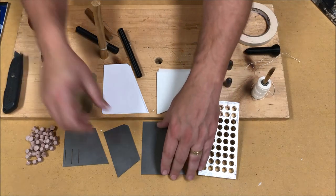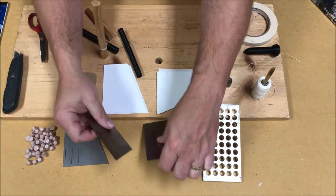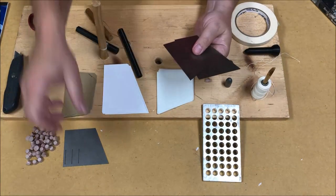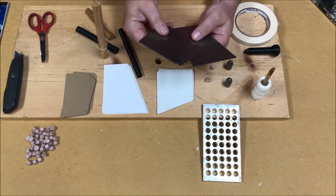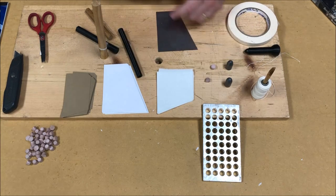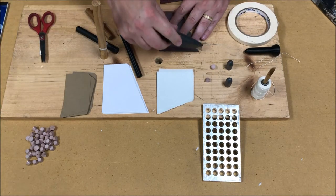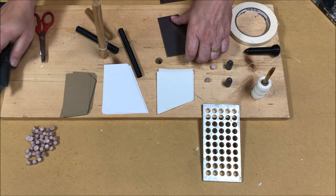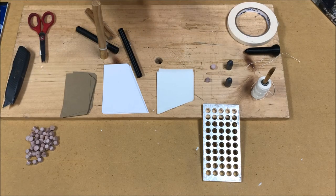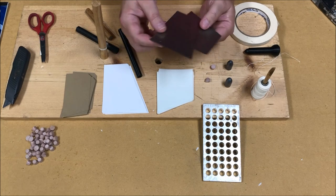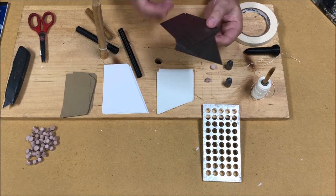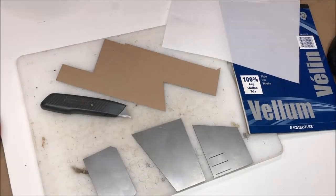So I've got a set of templates here, steel templates that are precision made that allow you to cut out these pieces of paper very easily. You just lay it over and use a razor knife. Fourth Armory is where you can obtain these, and I'll put a link down below.